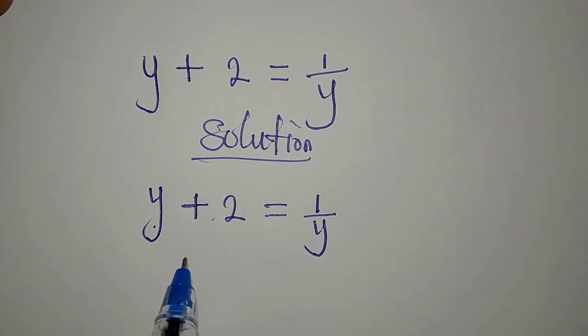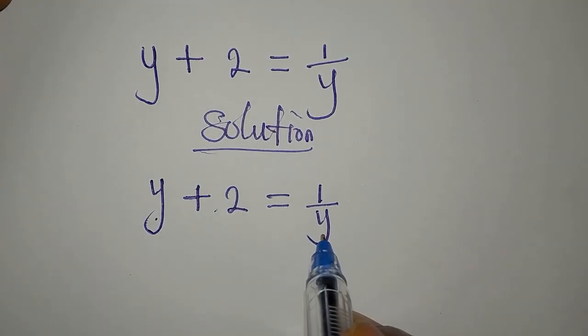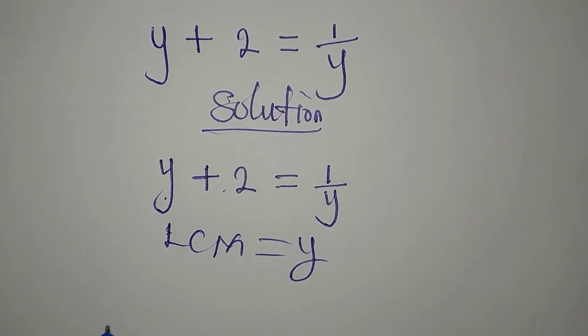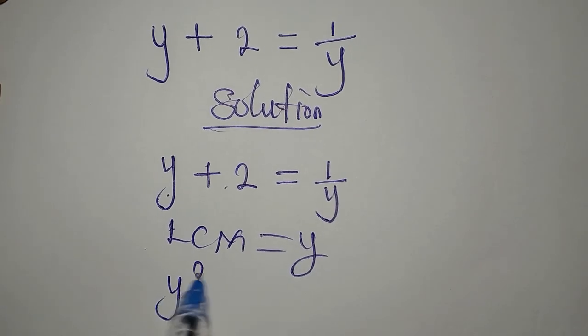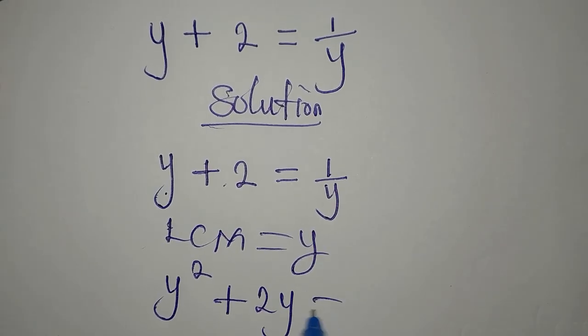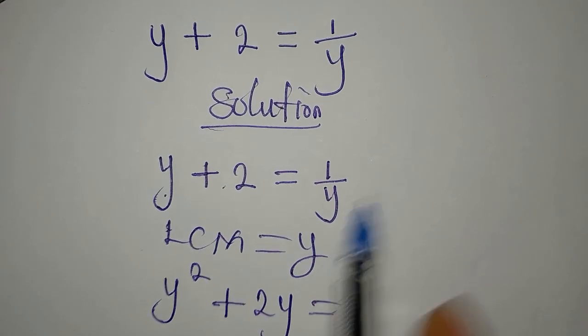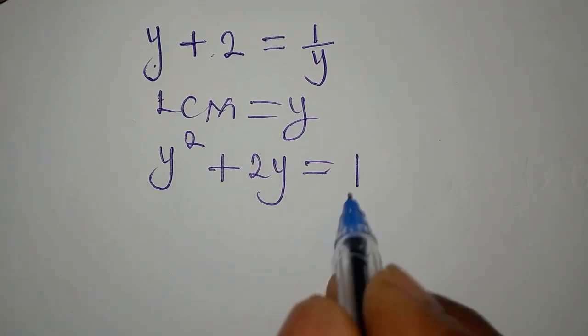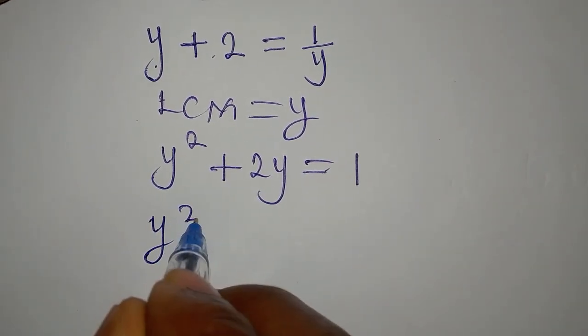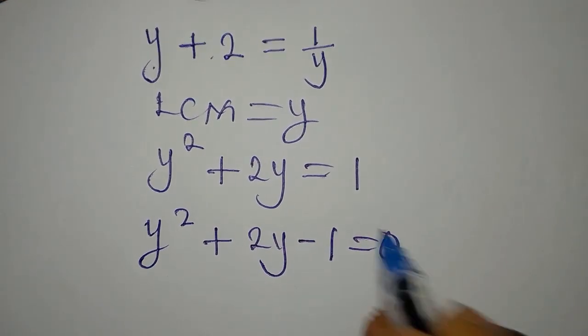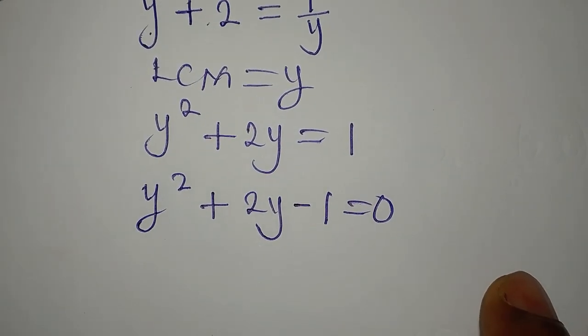The LCM is y, so y times y is y squared, y times 2 is 2y, then y times 1 over y is 1. We will bring this to the left, we have y squared plus 2y minus 1 equals 0.